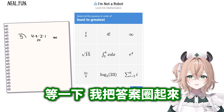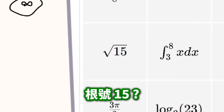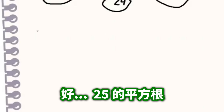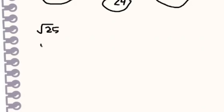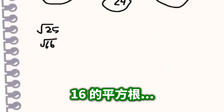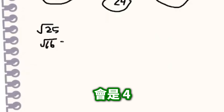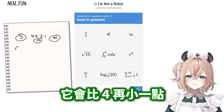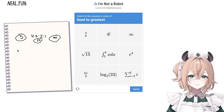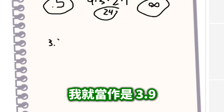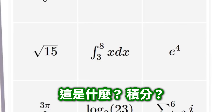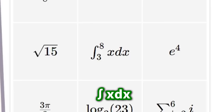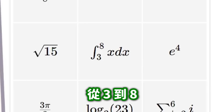Infinity — I mean, that's the biggest one. Hold on, circle my answers. Square root of 15 — okay, well the square root of 25 is 5, square root of 16 is 4, so it would be just a little bit less than 4.